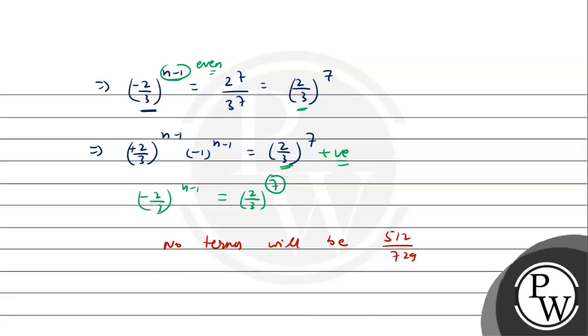So no terms will be 512 by 729. This is the most appropriate answer to this question. Hope you understood it well. Best of luck.